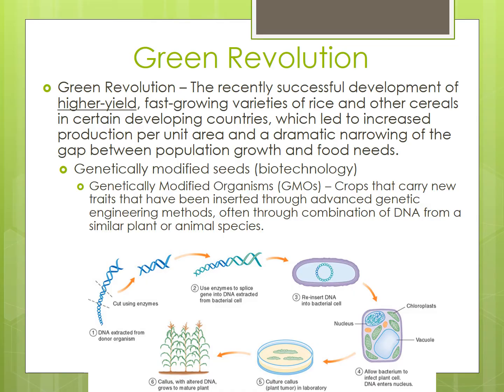The principal component of the Third Agricultural Revolution was the Green Revolution, when genetically modified organisms were developed. GMOs are crops that carry new traits that have been inserted through advanced genetic engineering methods, often through combination of DNA from a similar plant or animal species. The Green Revolution was all about producing higher-yield varieties of certain grain crops like rice, wheat, and corn.